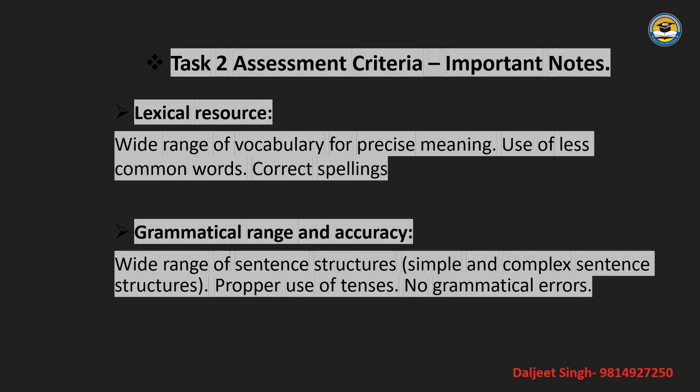The next assessment criterion is Lexical Resources — a wide range of vocabulary. This means you should not just use vocabulary synonyms, but also vary word forms. For example, if you used a noun, next time use a verb; then use an adjective. Use precise meaning, less common words, and correct spelling.